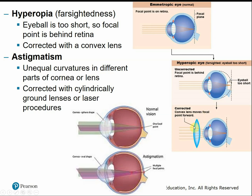Hyperopia is typically corrected with a convex lens to shorten the focal point. In astigmatism, there are unequal curvatures in different parts of the cornea or lens, corrected with cylindrically ground lenses or laser procedures.